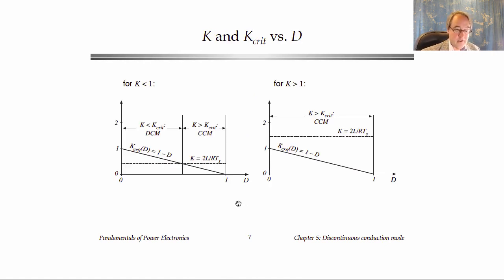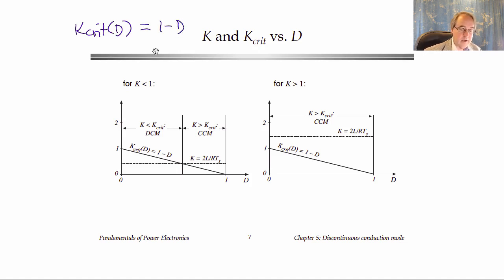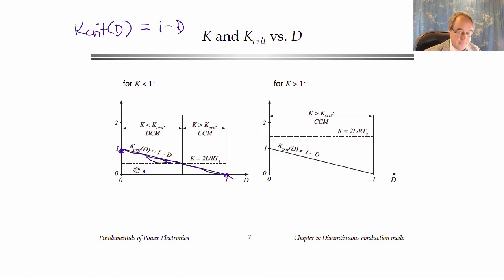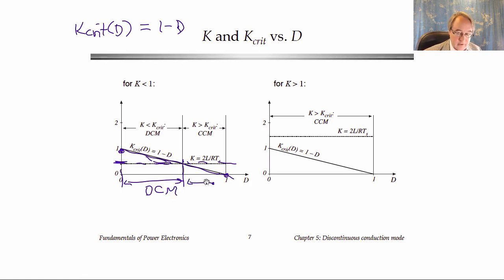Here is a plot of K_crit versus D for the buck converter. K_crit equals 1 minus D, or D prime: it equals 1 at D = 0 and 0 at D = 1. Comparing to K: if K is less than 1, we'll be in discontinuous mode over the range where K is less than K_crit, and in continuous mode at higher duty cycles. If K is greater than 1, then K is always greater than K_crit and we're always in continuous mode.